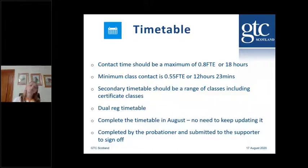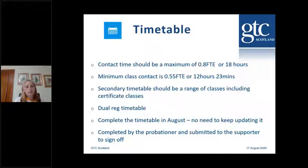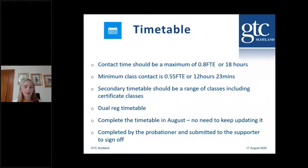The contact time for a probationer should be a maximum of 18 hours. Pupils are in for 25 hours; a full-time teacher teaches for 22 and a half hours. A probationer has a maximum contact time of 0.8, or 18 hours, and a minimum of 0.5, or 12 hours 23 minutes. So if you have two probationers, one could have 13 hours contact and another 17 hours — both are acceptable. It cannot go above 18 hours on average over the course of the year.